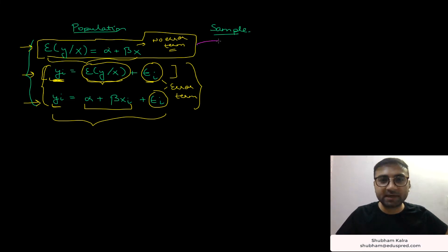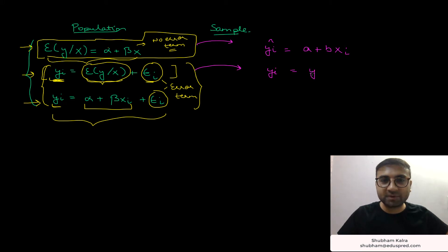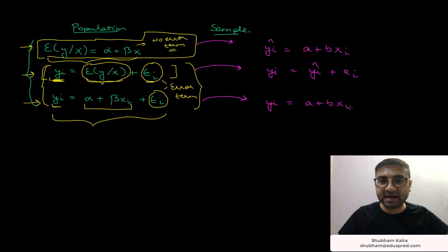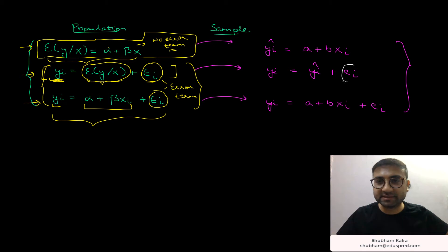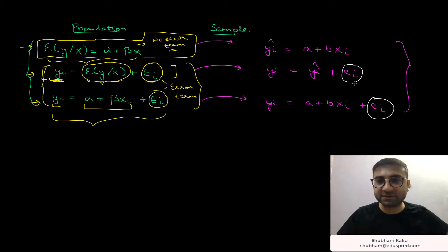On the sample side, the counterpart of the first population equation is yi hat equal to a plus bxi. The counterpart of the second is yi equal to yi hat plus ei. And the counterpart of the third is yi equal to a plus bxi plus ei. Epsilon i is the population error term, and ei is the sample error — you can just call it the sample error for now.